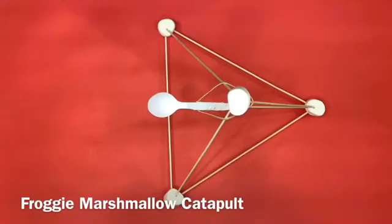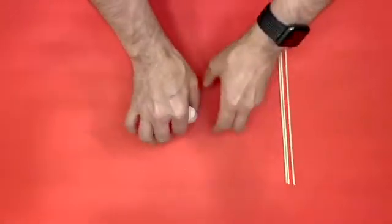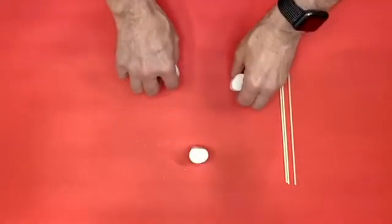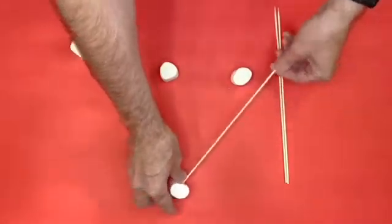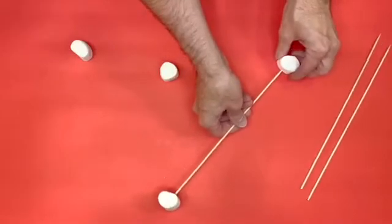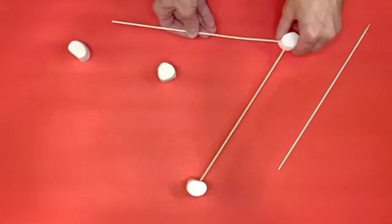The first step is forming a triangle by using three marshmallows and three skewers. Insert each of the skewers into each of the marshmallows. Remember, don't eat them just yet. Make sure you are careful as the skewers are quite sharp. They will form the base of your catapult.